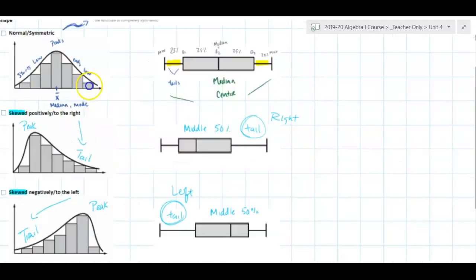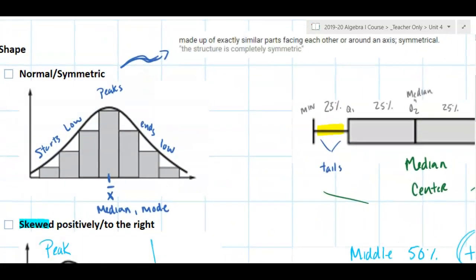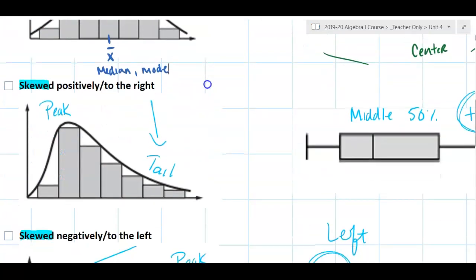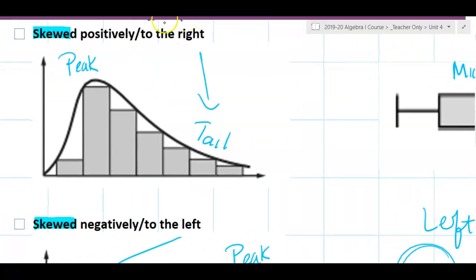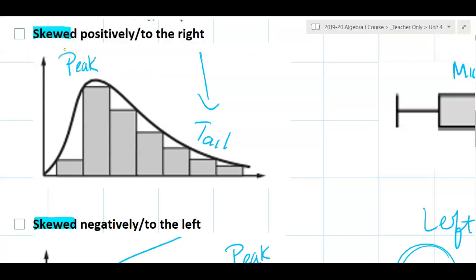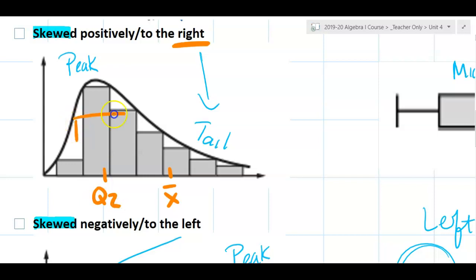In a normal distribution, the mean, median, and mode all fall right in the center. In a positively skewed distribution — skewed to the right — the mean gets pulled to the right; the mean is higher than the median. The median will be inside the middle 50% box, with a short tail to the left and a longer tail to the right. The longer tail to the right tells us the distribution is skewed to the right, because the mean got pulled to the right.